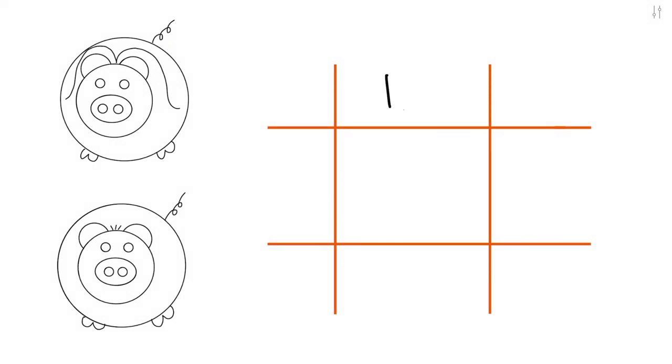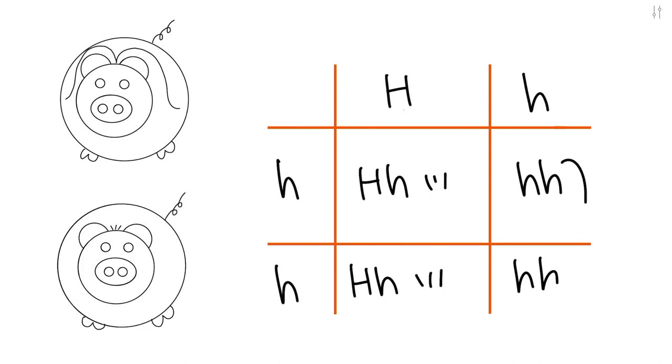In the second combination of the third generation, we have genotypes of heterozygous and homozygous recessive. As a result, we have a 50% chance of heterozygous and 50% chance of homozygous recessive. Then the phenotype would be a 50% chance of short hair and a 50% chance of long hair.